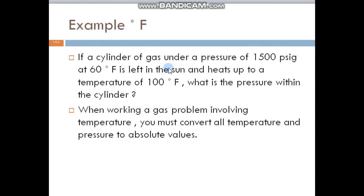We have an example, but before we start answering the question, we have to understand this: When working a gas problem involving temperature, you must convert all temperature and pressure to absolute values. That means the temperature, if it is in Fahrenheit, you have to change it to Rankine. And if the temperature is in Celsius, you have to change it to Kelvin. What about the pressure? If the pressure is gauge pressure, you have to change it to absolute pressure.